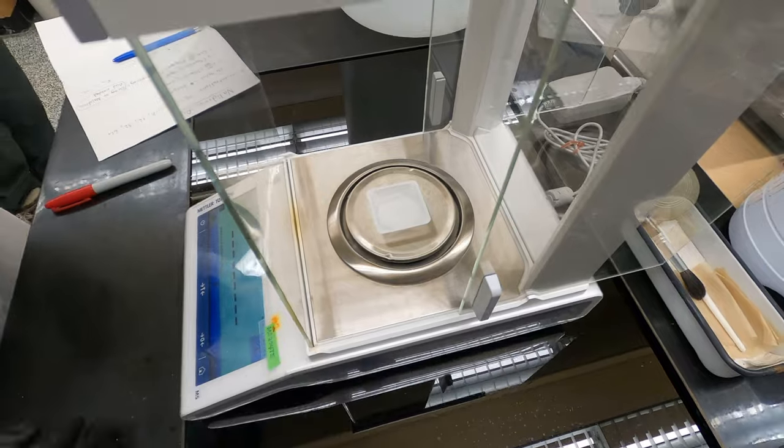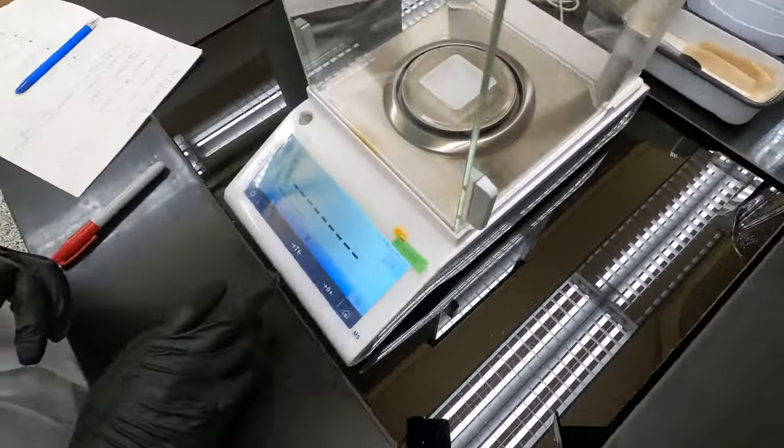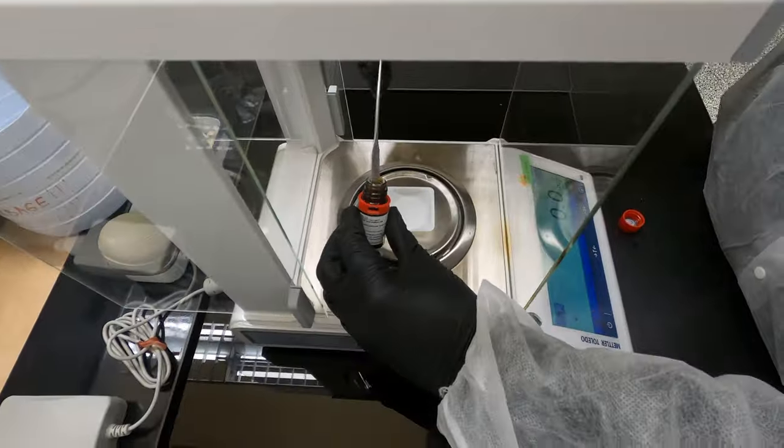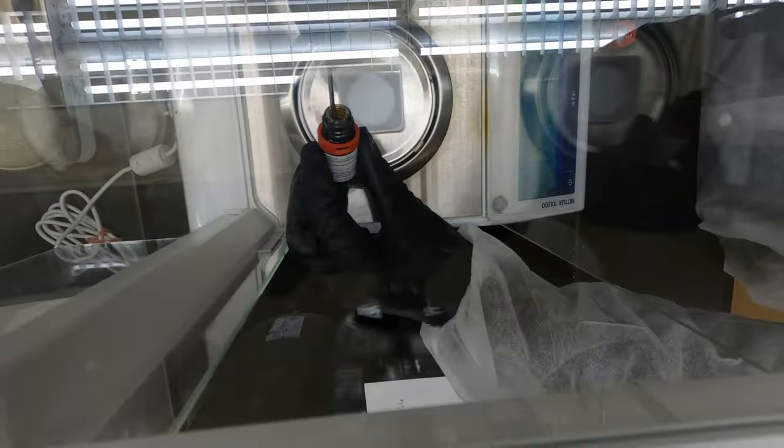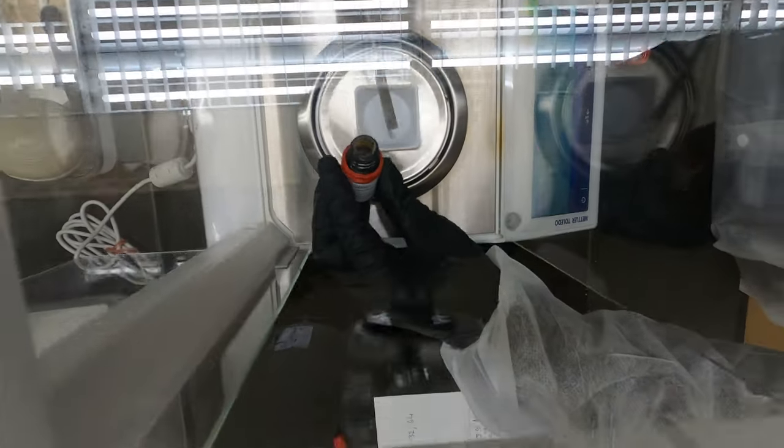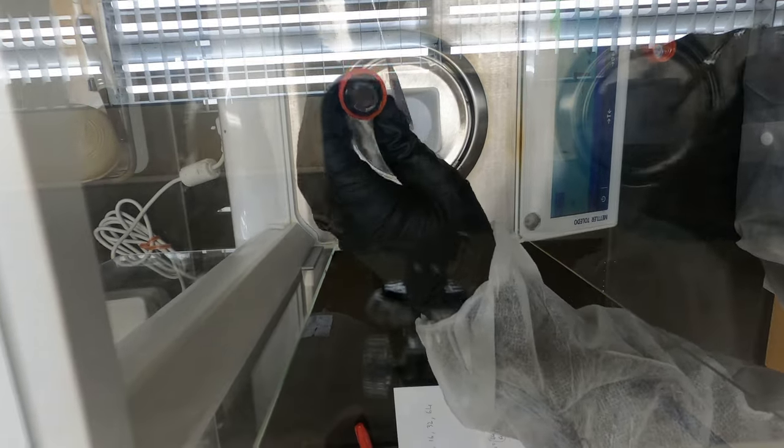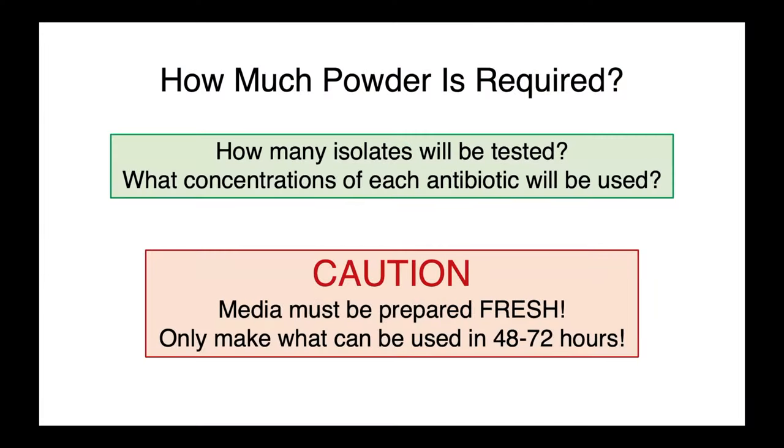The first step in preparing media for agar dilution is to weigh out our antimicrobial powders. We do this using an analytical balance, which is a precision instrument that allows us to mass out powders in milligram quantities. So before we measure out our antibiotic powders, we first have to calculate exactly how much we need.